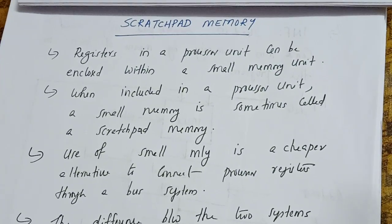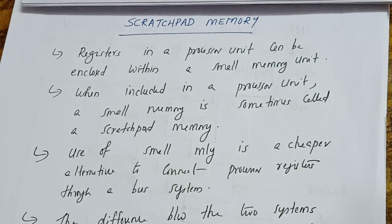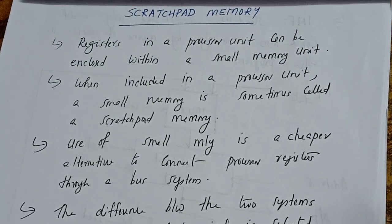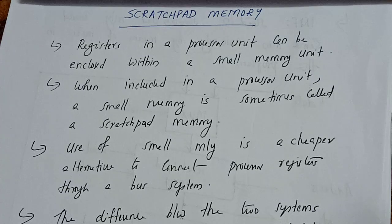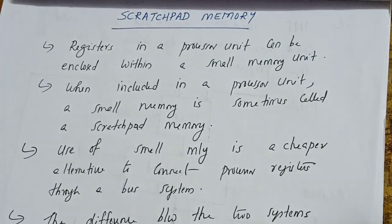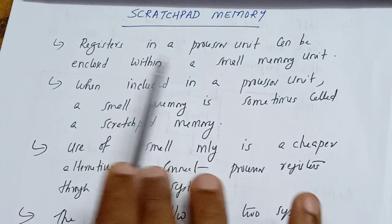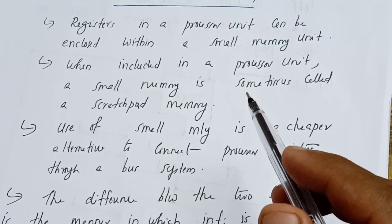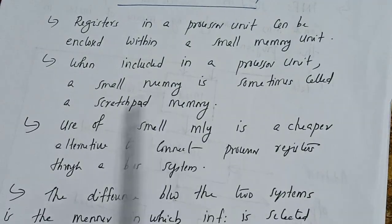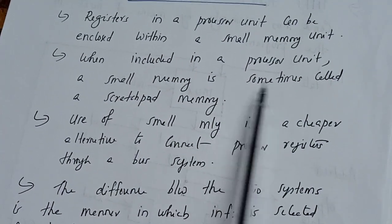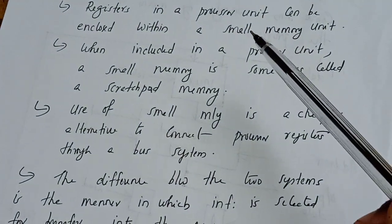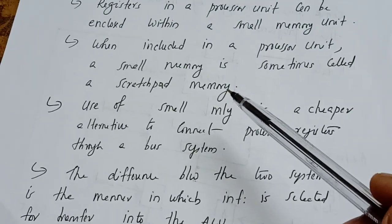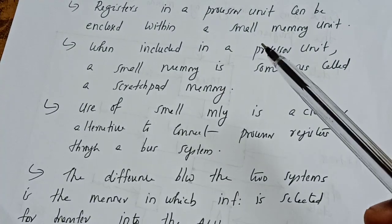Today we are going to learn about scratchpad memory. In the last class, we learned about bus organization, and at that time I mentioned there is an alternative method for accessing registers. That particular concept is called scratchpad memory. The registers in a processor unit can be grouped and enclosed within a small memory unit included in a processor unit. That small memory is called scratchpad memory.